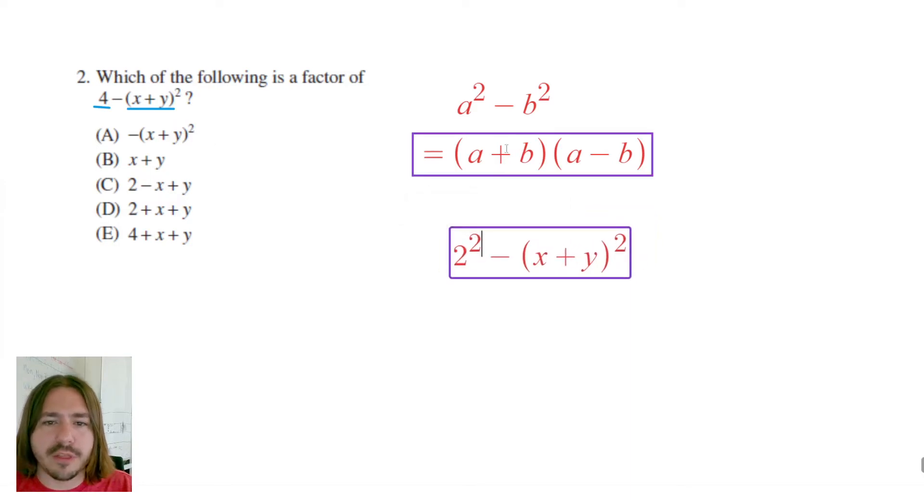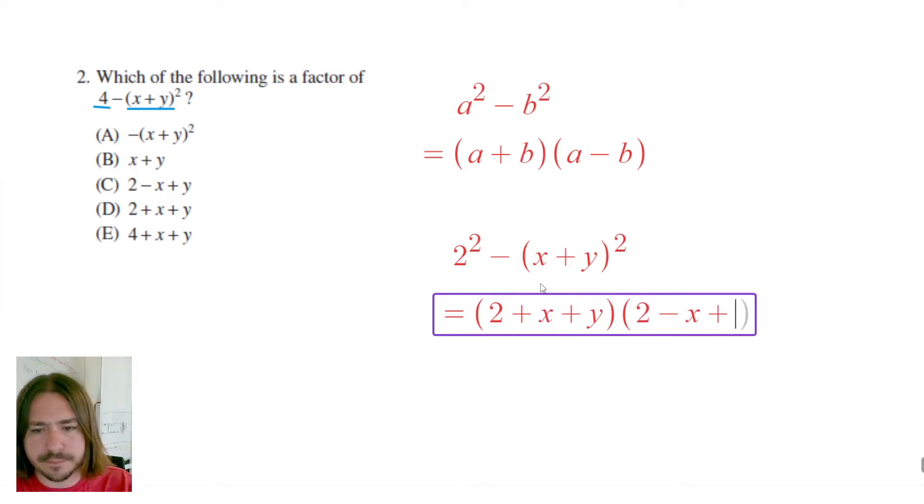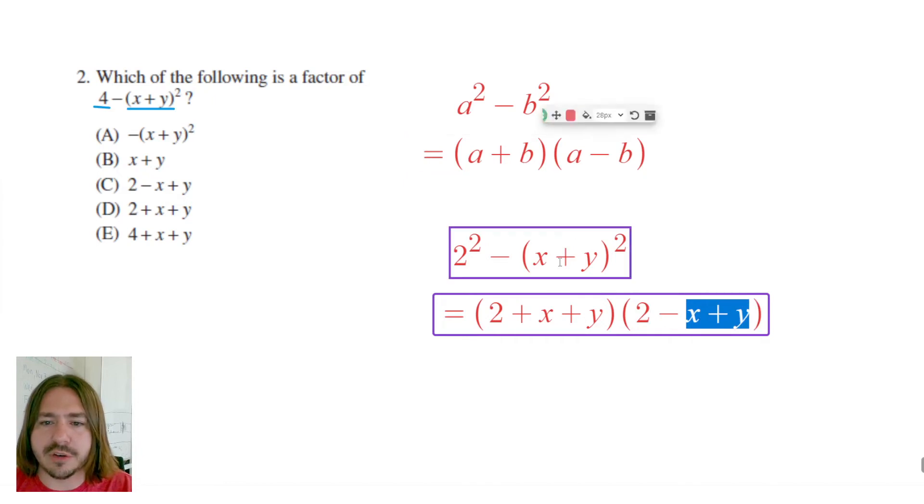So if we follow our difference of two squares rule we can rewrite this as (2+x+y) times (2-(x+y)). Now you want to be a little careful here because I can't just write it like this. I'm subtracting the entire b expression which is (x+y), so really I need these in parentheses and then I need to distribute that negative sign.